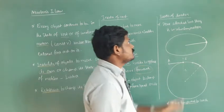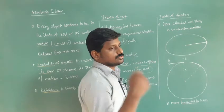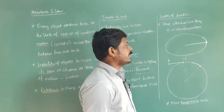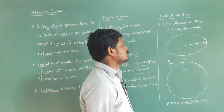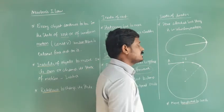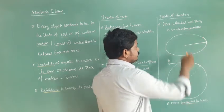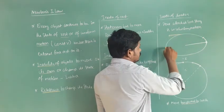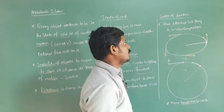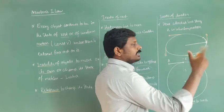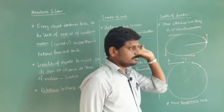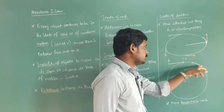For inertia of direction: a stone is attached to a string and set in circular motion by rotating the string. In circular motion, the velocity at every point is tangential. Now, if we suddenly release the string, the stone does not continue in circular motion — it moves in a tangential direction instead.